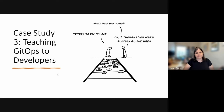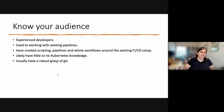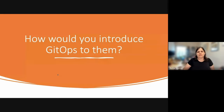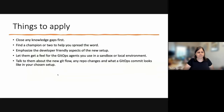Case study three: teaching GitOps to developers. These are experienced developers used to working with existing pipelines. They've created scripting and whole workflows around the existing CICD setup and have invested in it a lot. They likely have little to no Kubernetes knowledge — if you're introducing GitOps to them, you may be the first one also introducing Kubernetes. And they usually have a robust Git setup, especially around edge cases where it breaks.